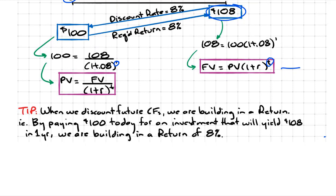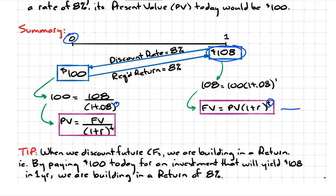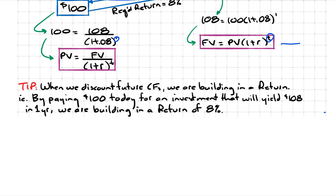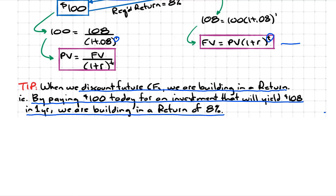Just to reiterate what I said before, this is a very important concept because throughout the CFA program, all three levels, we're going to be doing a lot of valuation. In other words, we want to find out how much a stock or bond is worth today. You're going to be given future cash flows and asked to calculate what the price is today. As we demonstrated here, to find out what it's worth today, you have to discount these future cash flows. The point I make is this: when we discount these future cash flows, you're actually building in a return. By paying $100 today for an investment that will yield 108 in one year, we are building in a return of 8%.